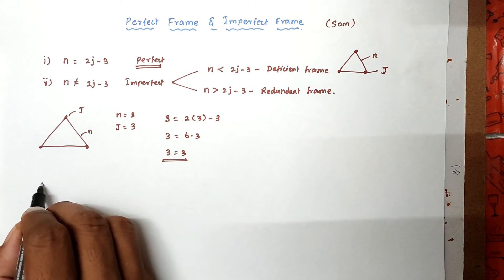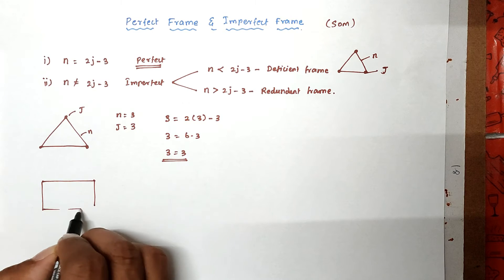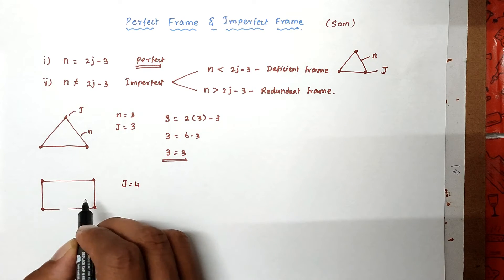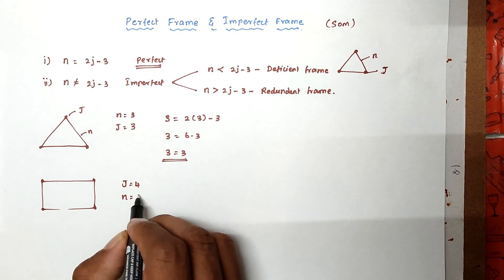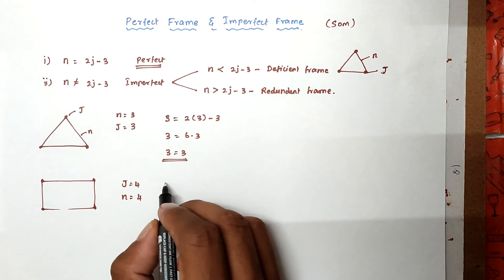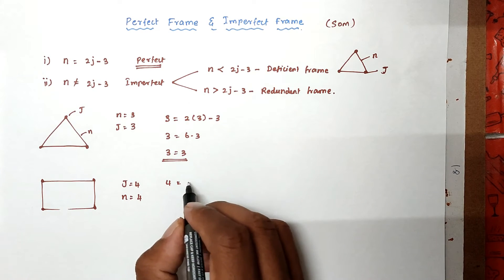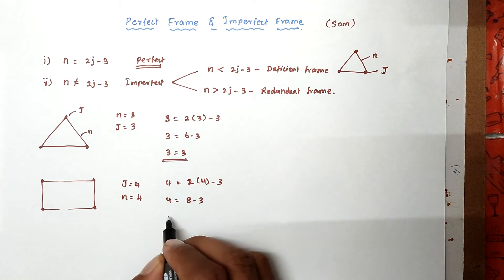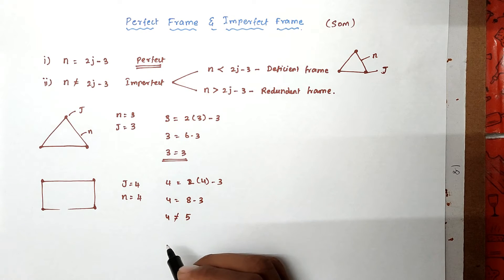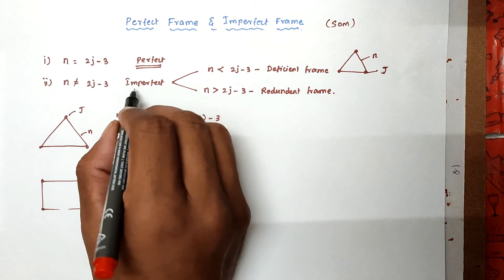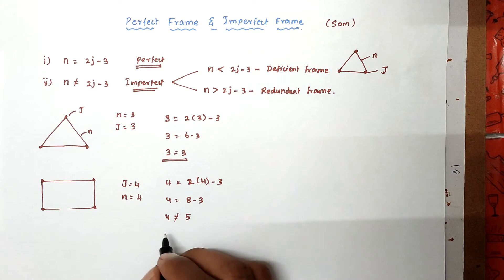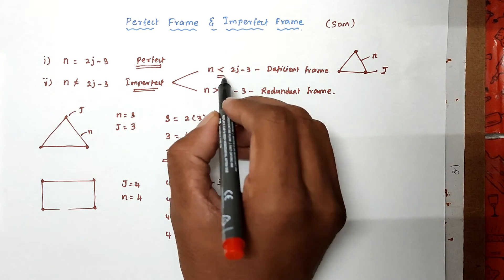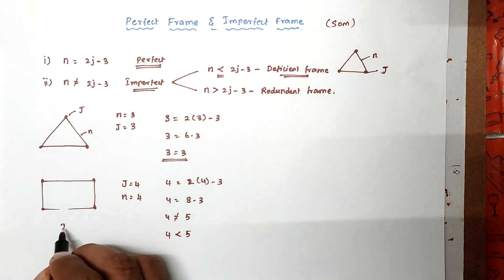For an imperfect frame example, consider a frame with four joints, so j equals 4, and four members, so n equals 4. Substituting: 4 = 2 into 4 minus 3 = 8 minus 3 = 5. So 4 is not equal to 5. This is an imperfect frame. Since 4 is less than 5, this is called a deficient frame.